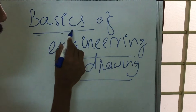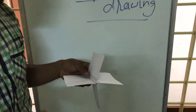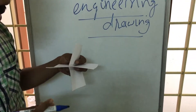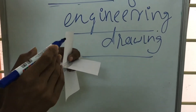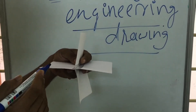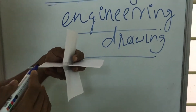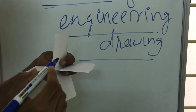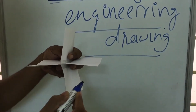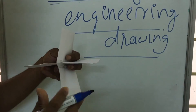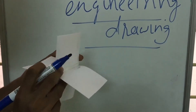Into basics of engineering drawing, first we study about what is the quadrant system. This is a vertical plane and this is a horizontal plane, and these planes divide the system into four quadrants: first quadrant, second quadrant, third quadrant, and fourth quadrant.